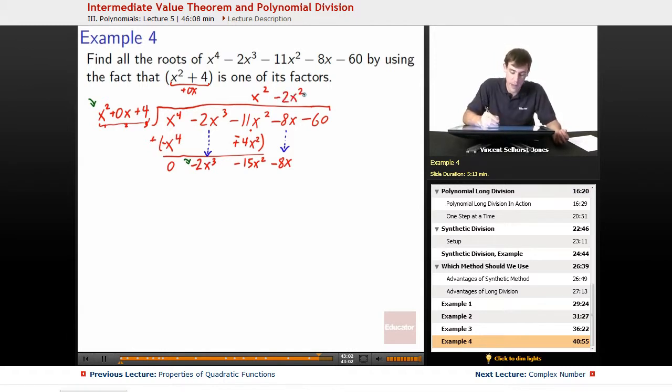Oh, whoops, sorry. We're dividing by x squared because negative 2x cubed divided by x squared is just x to the 1. So negative 2x times x squared gets us negative 2x cubed. And then negative 2x times 4 becomes negative 8x.